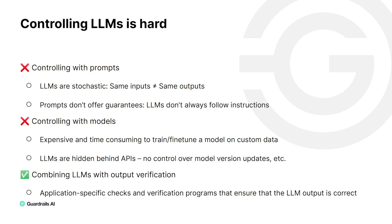So why is controlling LLMs hard in the first place? There are three different ways you as a developer can control LLM output. Prompting is not an ideal approach because LLMs are stochastic — in practice, even with the same input and the same prompt, you will see different outputs just running it again and again. Prompts don't offer guarantees. You'll see people adding lots of exclamations, instructions in all caps, warnings like 'do not print' — and the LLM will listen sometimes, but not many times.